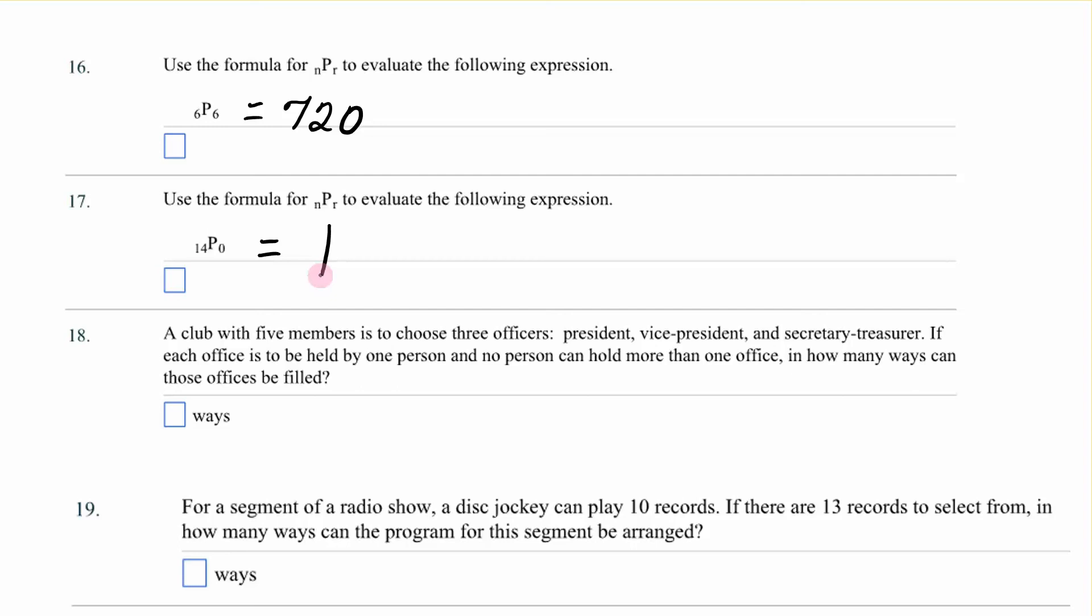All right. Now, let's look at some application problems. All right. We're finally going to look at a few application problems that show a little bit more about what this permutation notation, when is it actually used? All right. A club with five members is to choose three officers. President, Vice President, Secretary, Treasurer. If each office is to be held by one person, and no person can hold more than one office, in how many ways can those offices be filled? All right. You have a total of five to choose from. Order matters, because if you are President, then you cannot be Vice President, and so on.